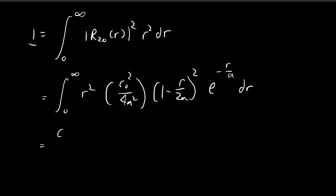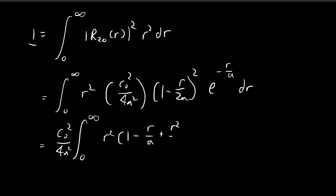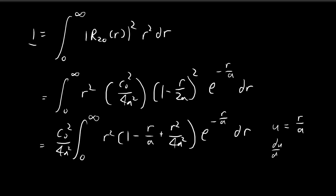We can pull out the constants, and then expand the squared polynomial term. So (1 minus r/2a)² becomes 1 minus r/a plus r²/4a², times e to the power of negative r over a, dr. We then simplify this integral using a substitution: let u = r/a, so du/dr = 1/a, meaning dr = a du.